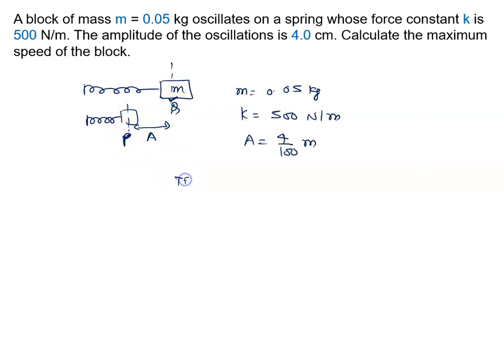The potential energy will be half k A square, but at Q the energy is only kinetic energy. This is half m v square, that is v max square, because it is the speed at the mean position.